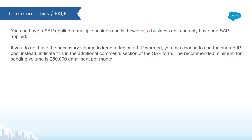If you do not have the necessary volume to facilitate the dedicated IP that comes with the sender authentication package, you can choose to use a shared IP pool instead. Simply indicate this in the additional comment section of the SAP form. The recommended minimum sending volume is 250,000 emails sent per month.